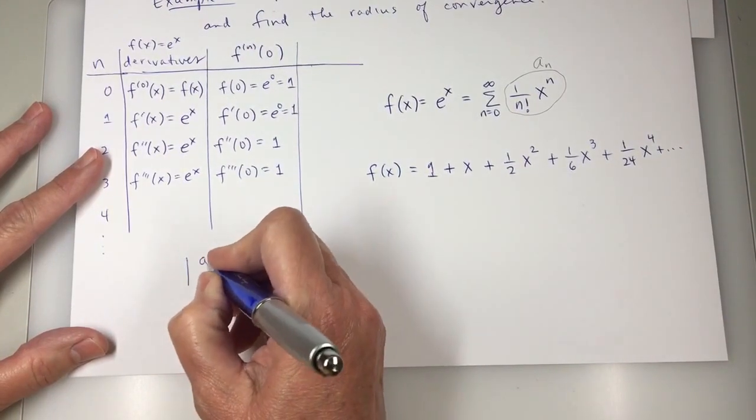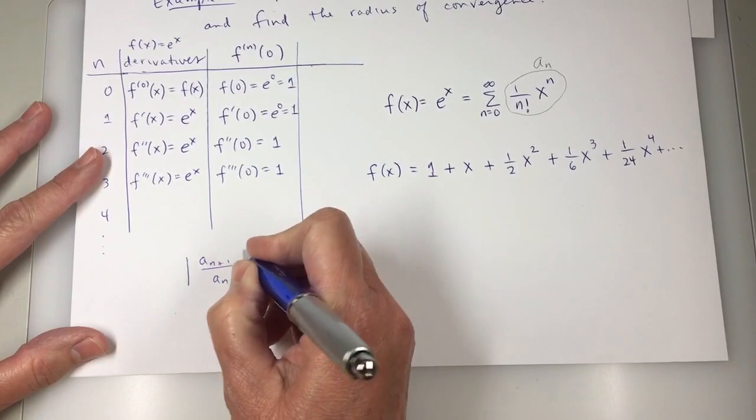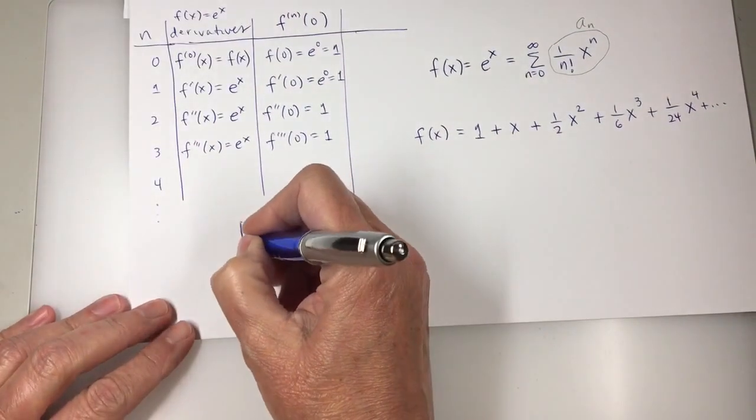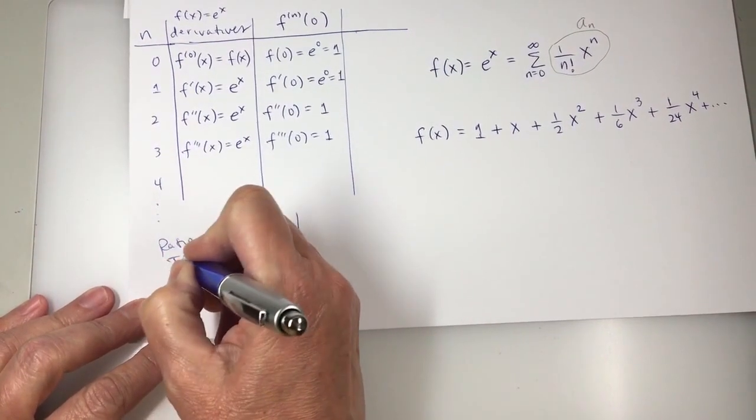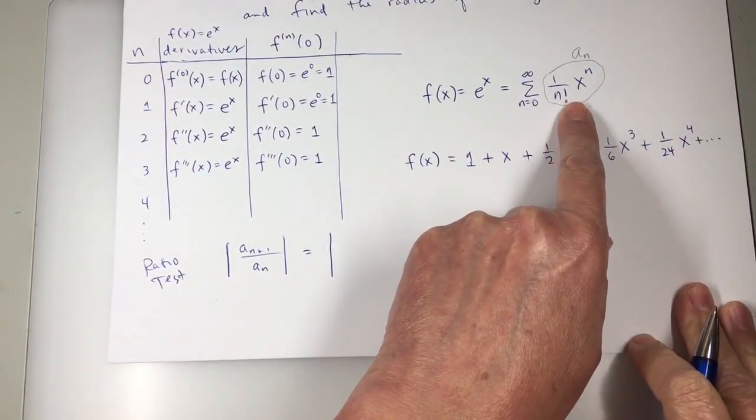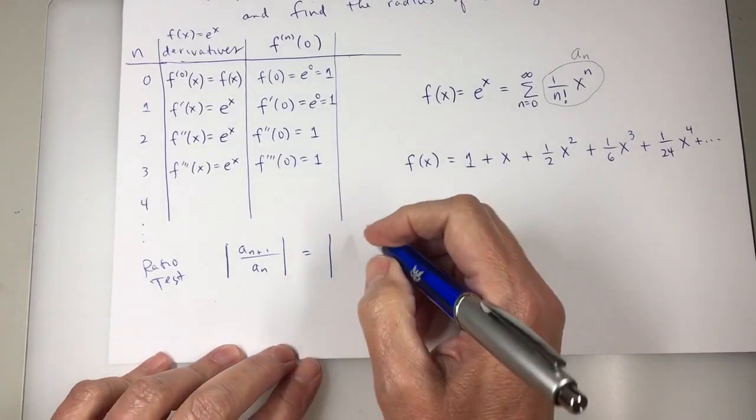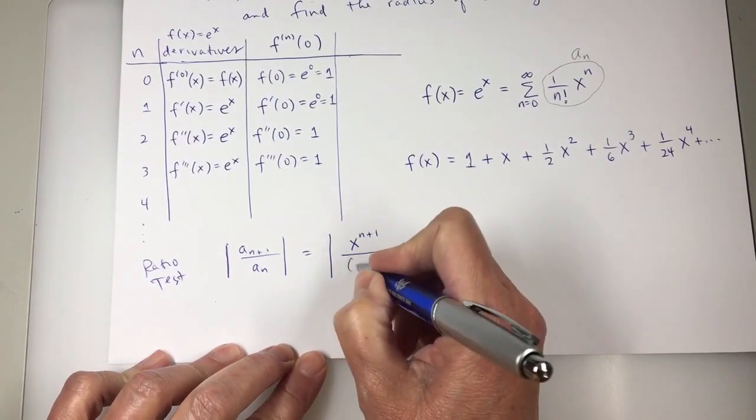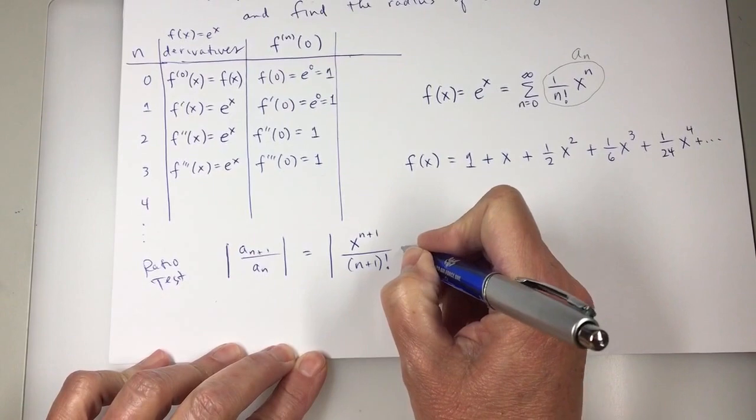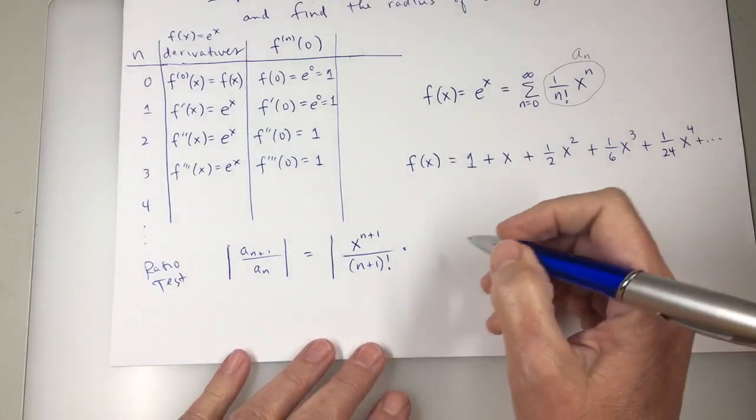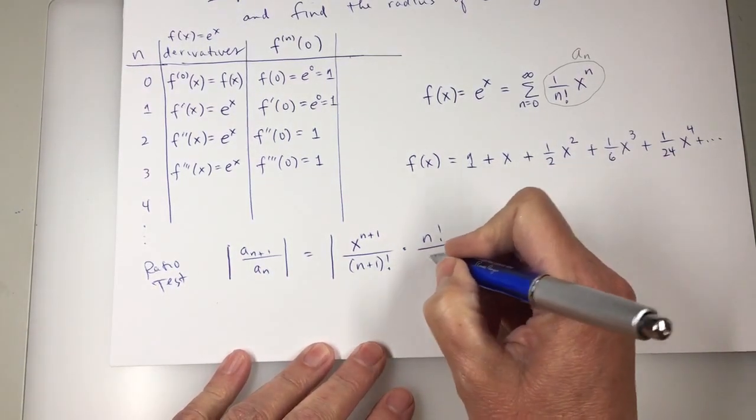And for the ratio test, I will do, well let's find this ratio, a sub n plus 1 over a sub n, the absolute value of that. Then I'm going to do the limit as n approaches infinity. Let's see, a sub n plus 1 is going to be x to the n plus 1 over n plus 1 factorial. Now it's divided by a sub n, so I'm going to multiply by the reciprocal. And the reciprocal would be n factorial over x to the n.